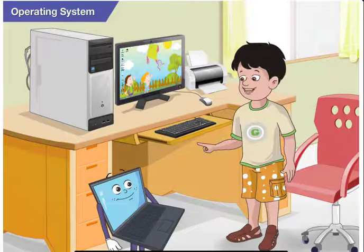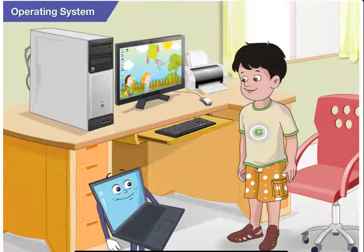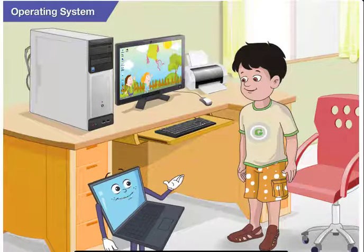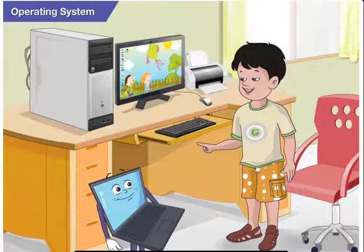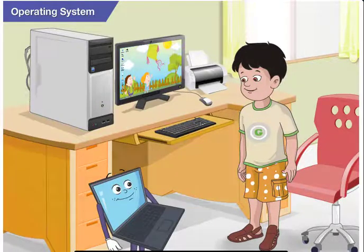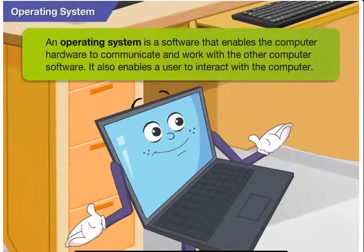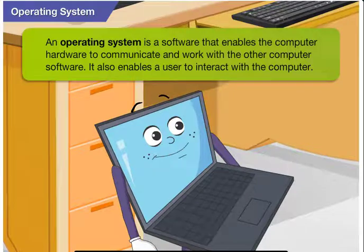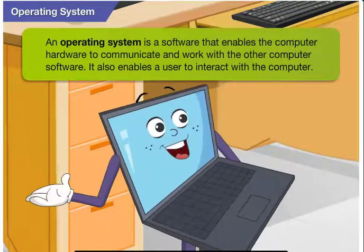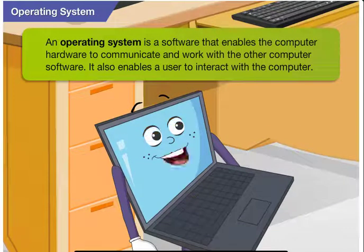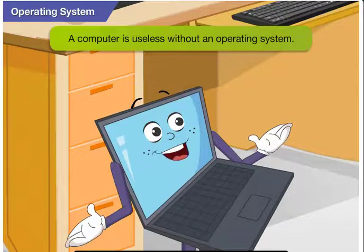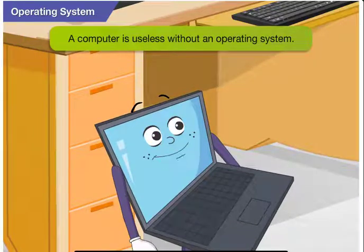I got it now. Windows 7 is a software which is an operating system as well. Yes, well done, Goggle. Can you explain more about the operating system? Definitely. An operating system is a software that enables the computer hardware to communicate and work with the other computer software. It also enables a user to interact with the computer. A computer is useless without an operating system.